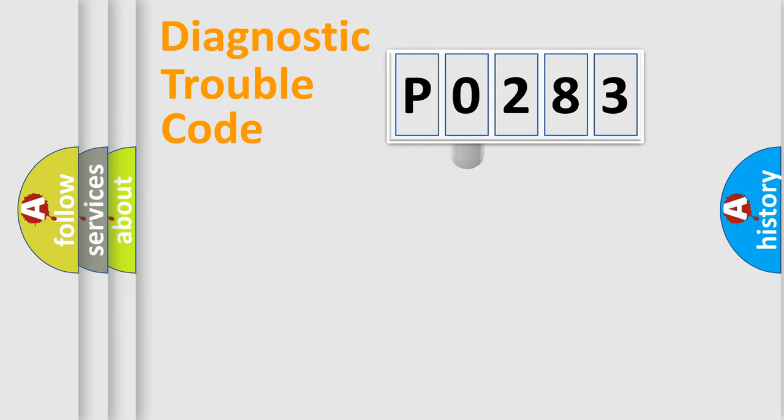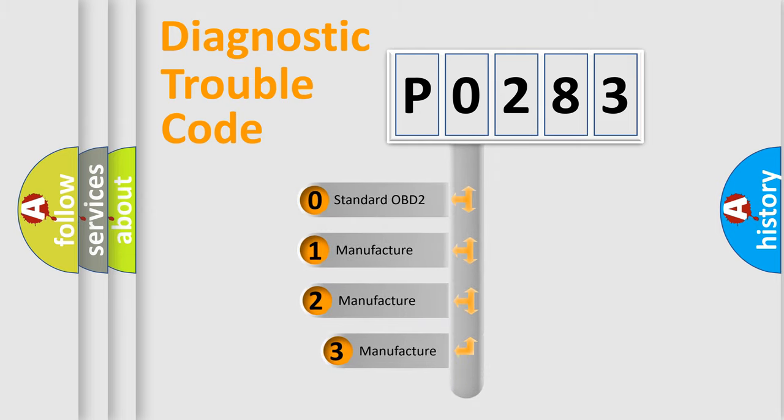If the second character is expressed as zero, it is a standardized error.